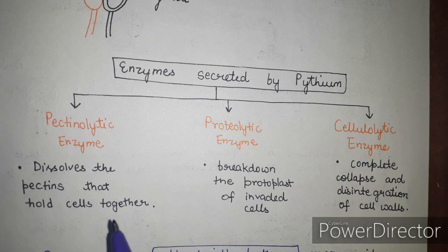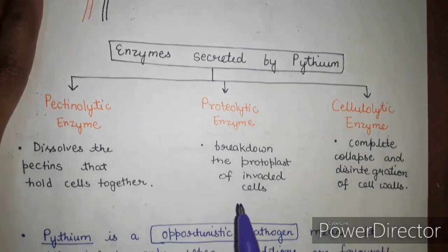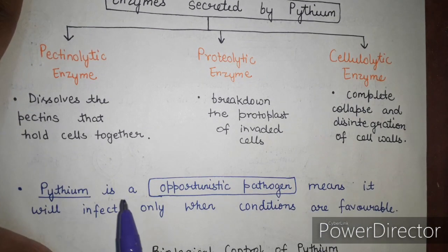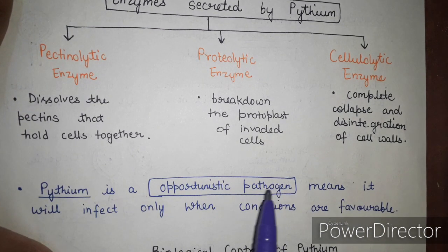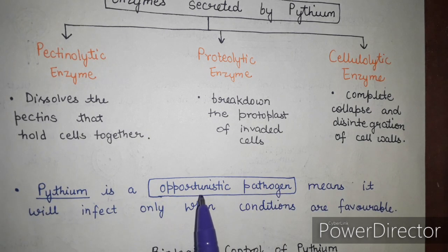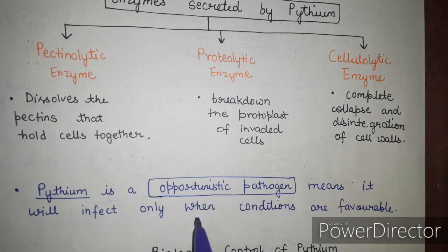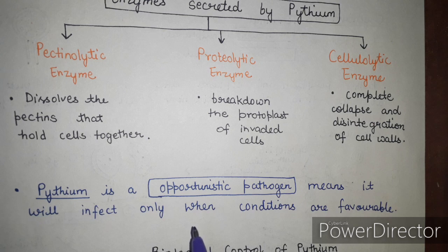Through these enzymes, Pythium breaks down cell walls, invades the protoplast, and dissolves pectins — causing complete destruction of host cells, which is why seedlings fail to stand erect and fall. Pythium is also an opportunistic pathogen, meaning it infects when conditions are favorable — temperature, moisture, and other factors are responsible for triggering infection.